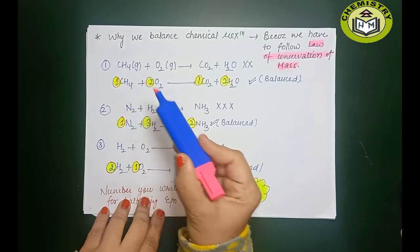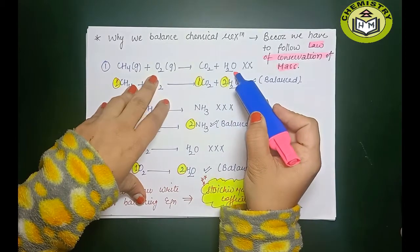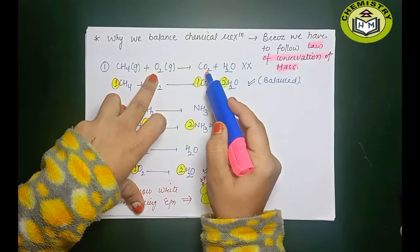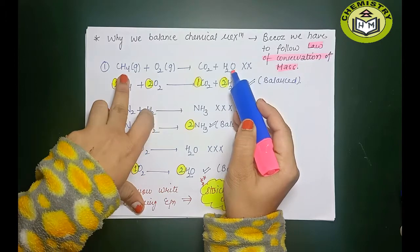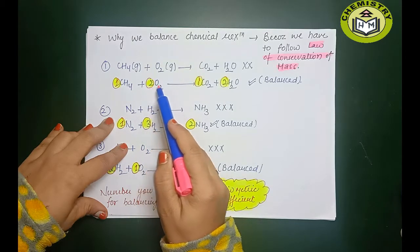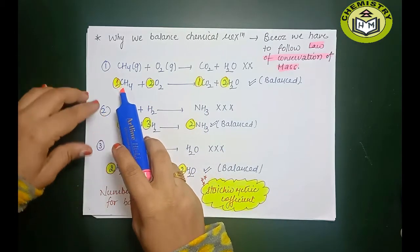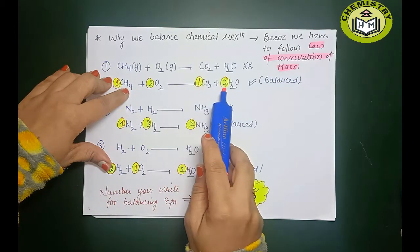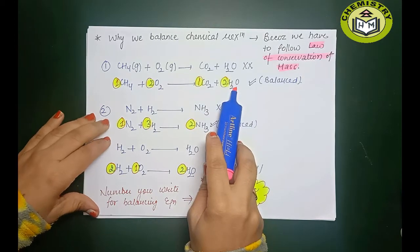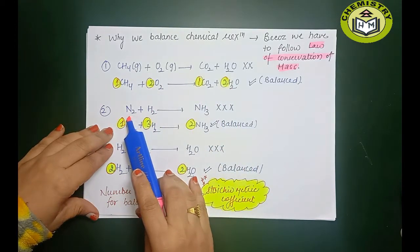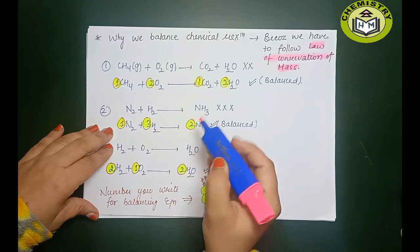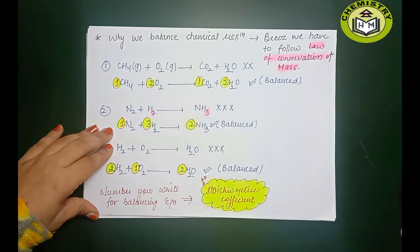See, the first reaction: CH₄ plus O₂ gives CO₂ plus water — but this reaction is not balanced. Why? Oxygen here is 2, but on the product side oxygen is 2+1 = 3. Hydrogen here is 4, but there it is 2. So I need to balance it. Similarly, the second reaction: N₂ plus H₂ gives ammonia — but this is also not balanced because there are 3 hydrogens needed but only 2 are present.